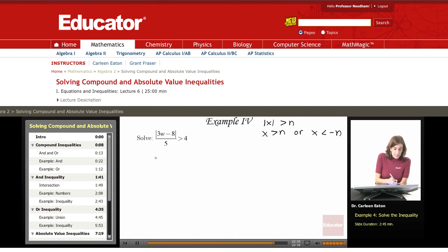So rewriting this and removing the absolute value bars as two different inequalities: 3w minus 8 divided by 5 is greater than 4, so that's this first form, or 3w minus 8 divided by 5 is less than negative 4.